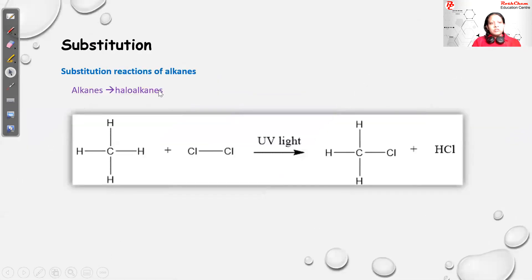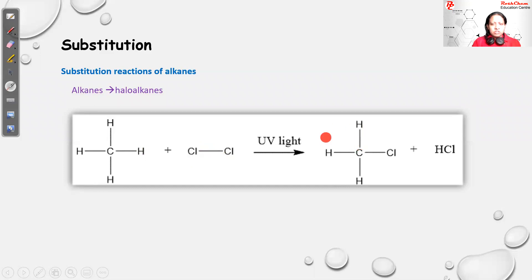First, substitution. Substitution is when an atom is replaced by another atom. Substitution can occur for alkanes and also haloalkanes. In alkane substitution we react alkanes with halogens like Cl2 and Br2. For example, methane (CH4) reacting with Cl2: the hydrogen from methane gets replaced by a Cl, making CH3Cl and HCl. We need UV light for this reaction — the UV light helps to break the Cl-Cl bond.